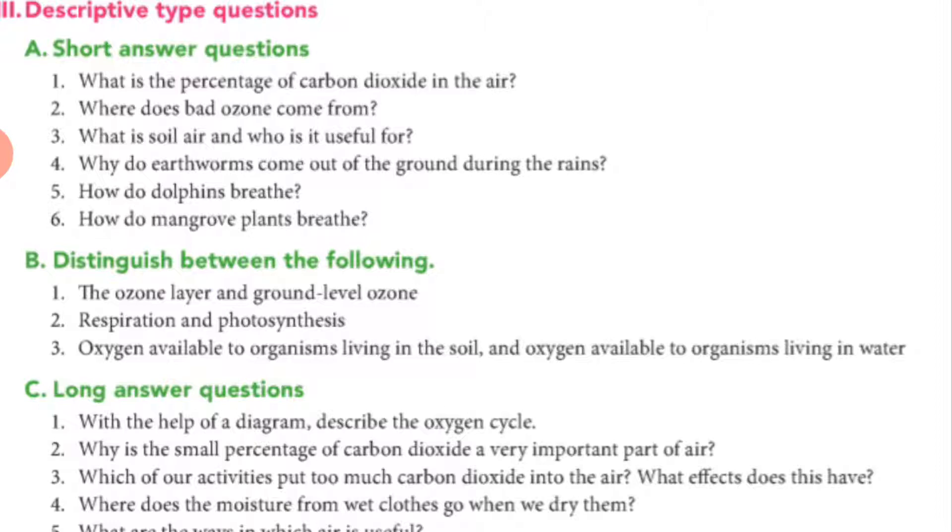Why do earthworms come out from the ground during the rain? Because rainwater will fill the holes or fill the space which is in the soil. That's why they need to breathe, that's why they come out of the soil.